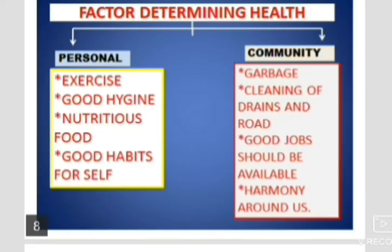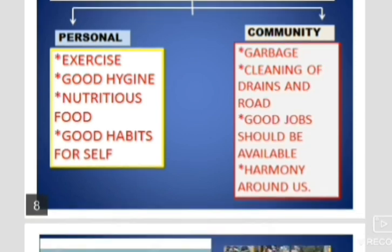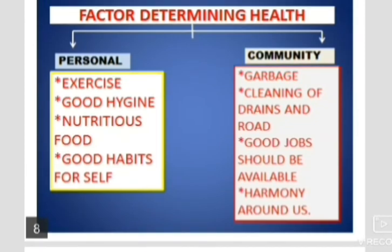The factors that determine health can be divided into personal and community factors. In the personal category: exercise keeps you fit, healthy food, and healthy living. Financial well-being also matters — those who do not have enough money cannot live happily. Harmony around us means living peacefully in our society, area, or even at home. If there is conflict at home, people cannot live peacefully or maintain good mental and family health.